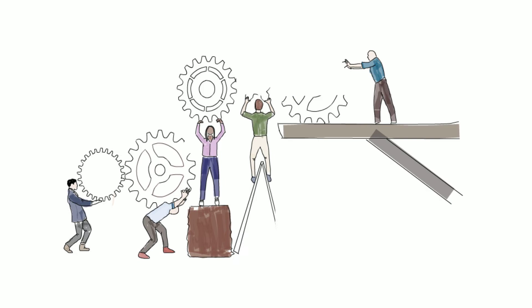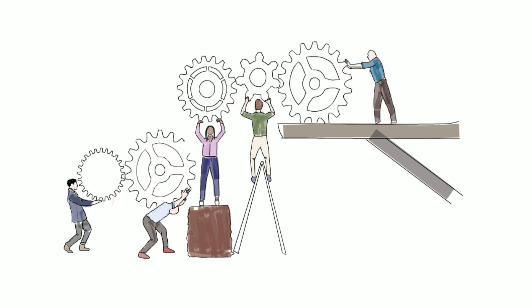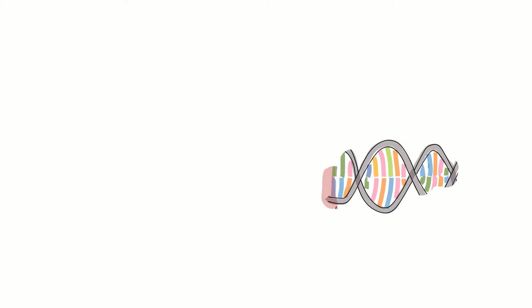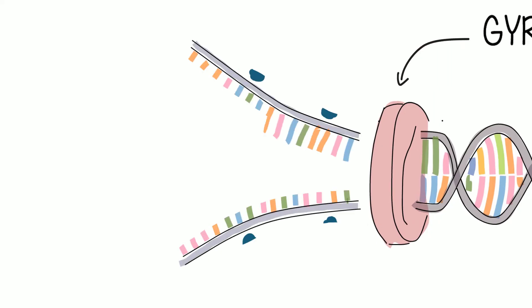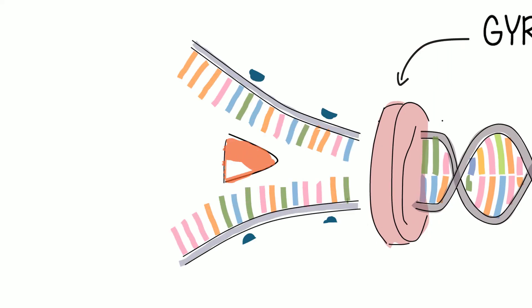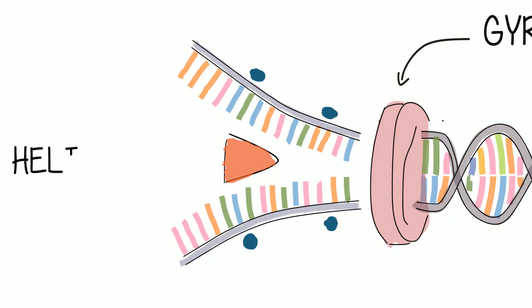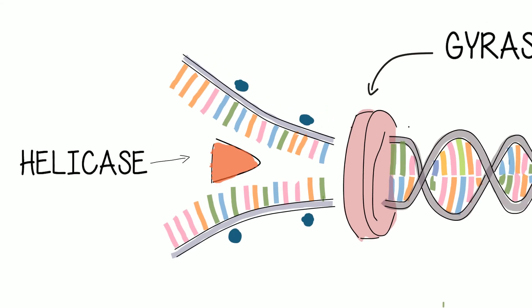But how exactly does it function? DNA replication is a complex system of enzymes and proteins. DNA gyrase relieves the strain of the double helix by catalyzing negative supercoiling, while helicase unwinds the double helix at the replication fork. It separates the strands by breaking the hydrogen bonds between complementary base pairs, and each strand becomes a parental template.